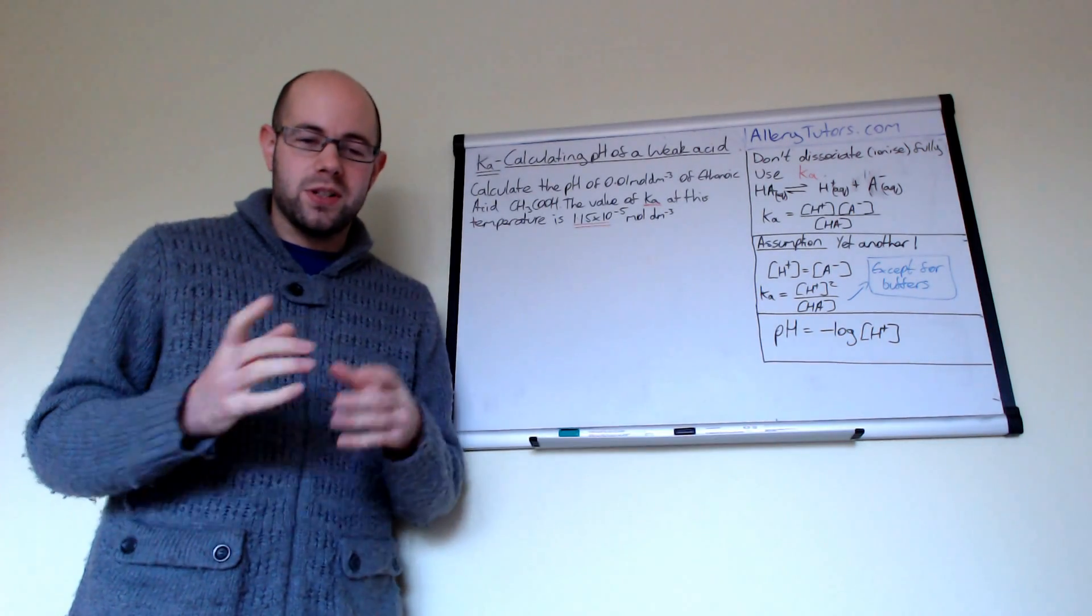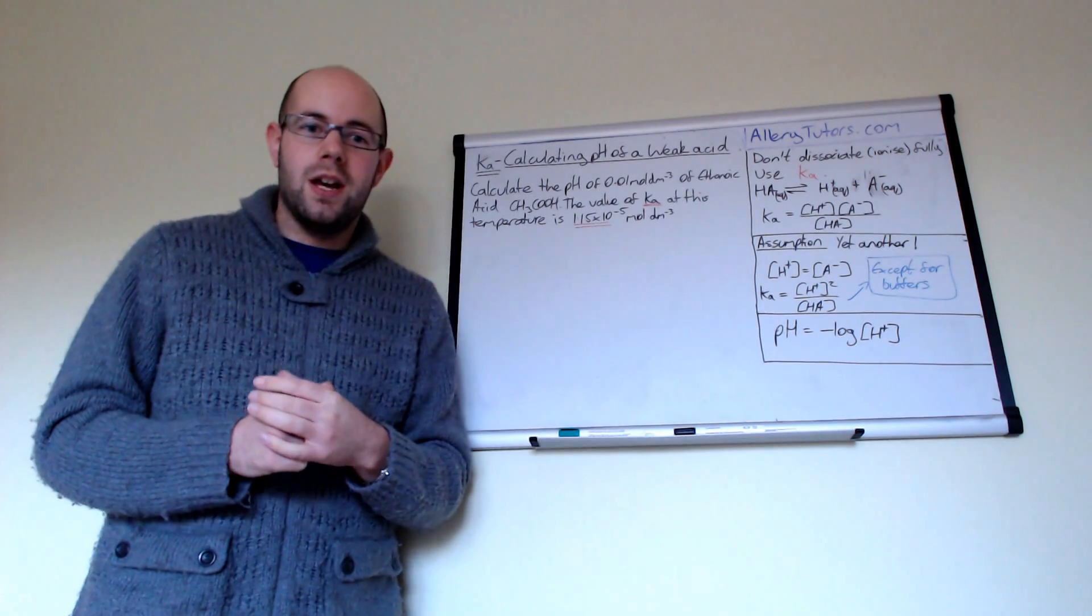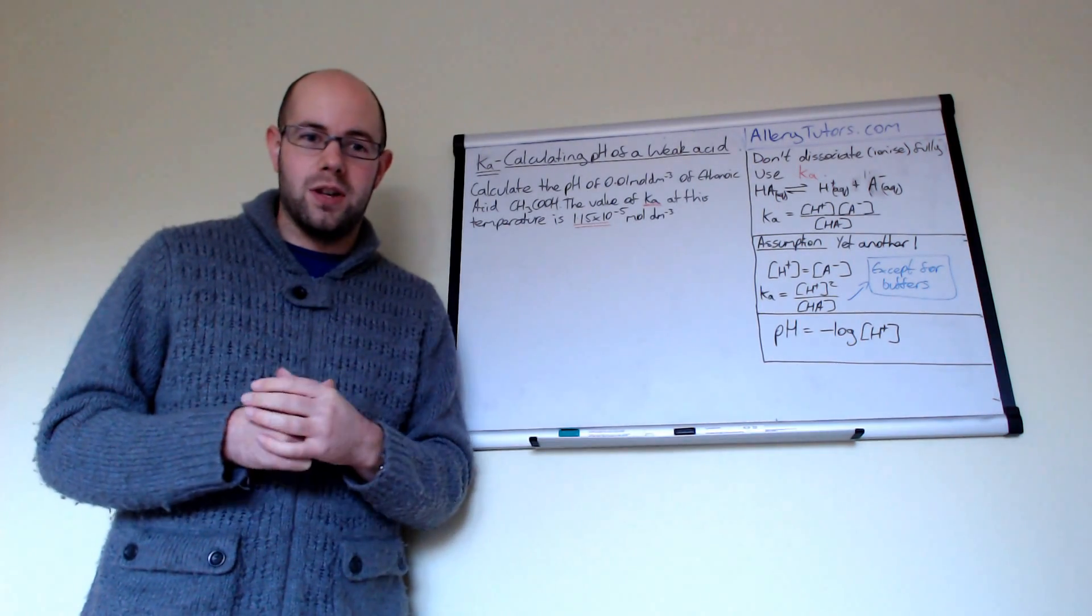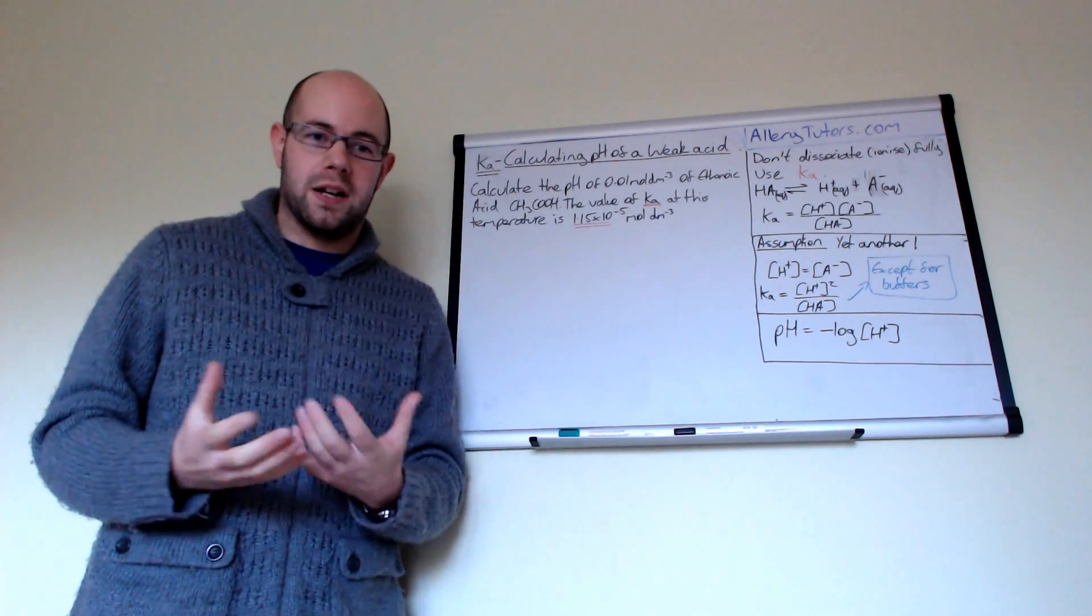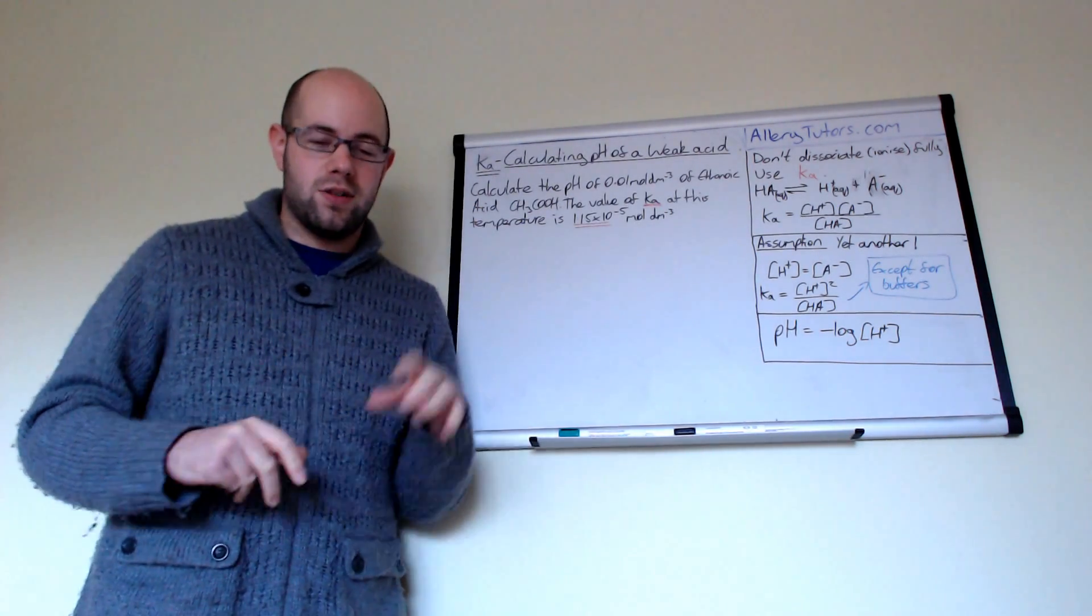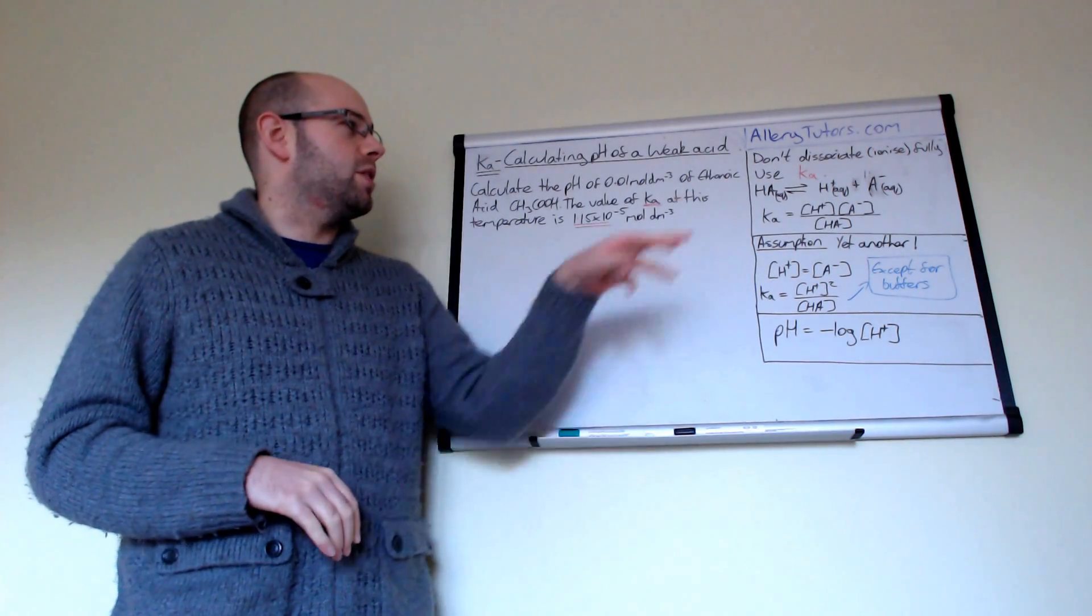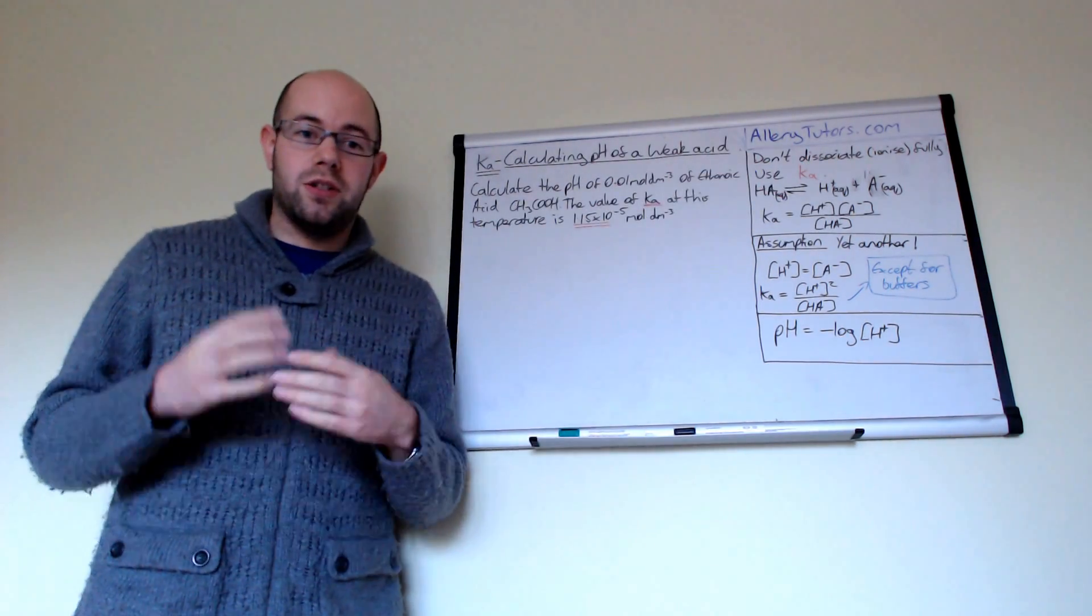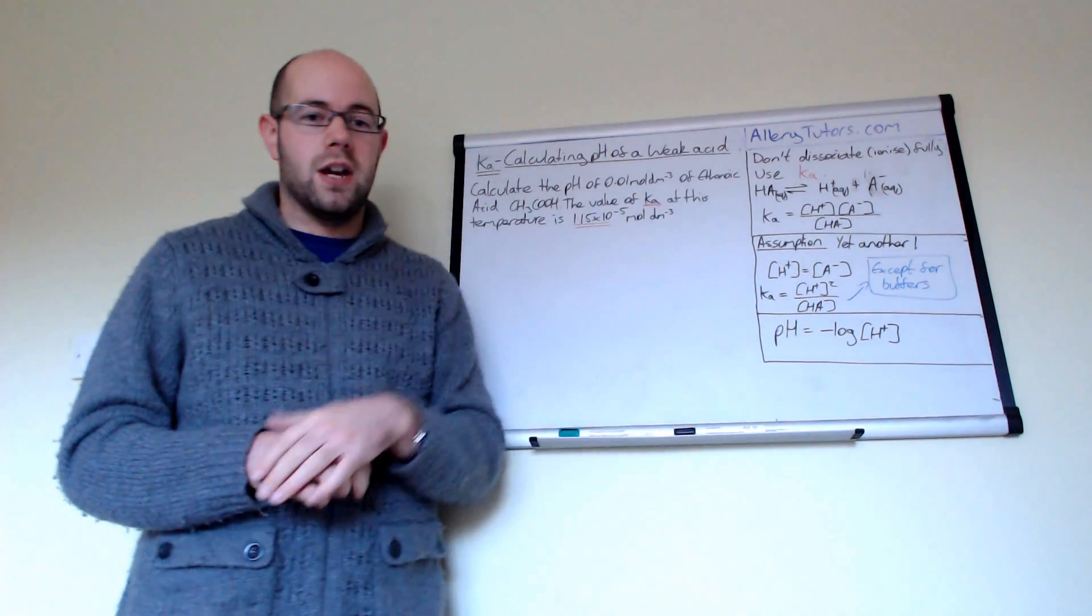So I'm going to start with what Ka means. So Ka is effectively the constant that we have to use and the Ka expression we have to use when we want to work out the pH of weak acids and the reason why we can't just assume that the concentration of your weak acids equals the concentration of H plus is because weak acids actually dissociate weakly. They don't ionise properly, so ionise and dissociate.